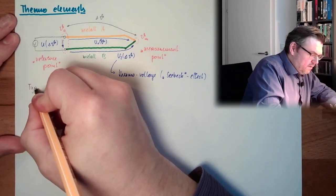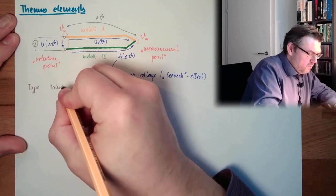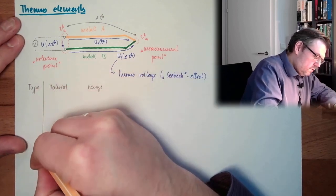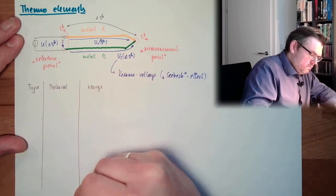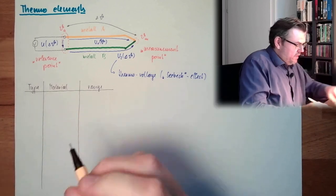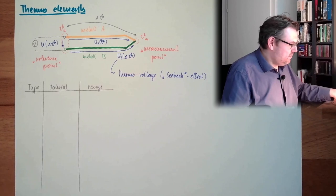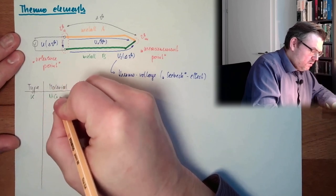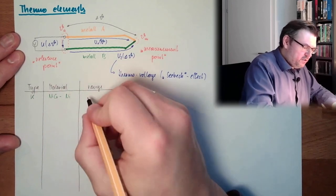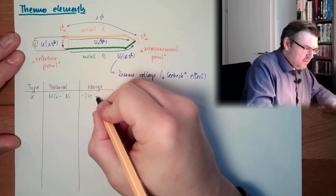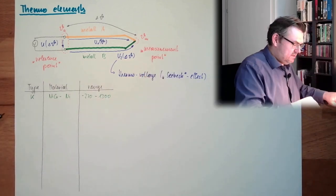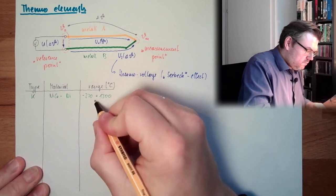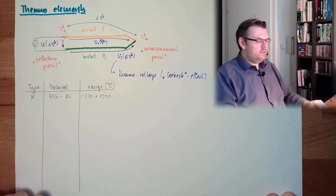And write it down, type, material, range. Very commonly used is the standard type K. This is nickel-chrome, chromium-nickel. And the range is between minus 270 degrees Celsius to 1300 degrees Celsius.